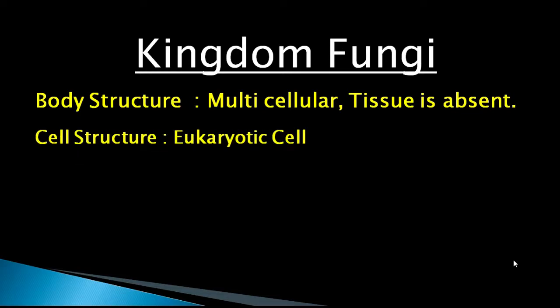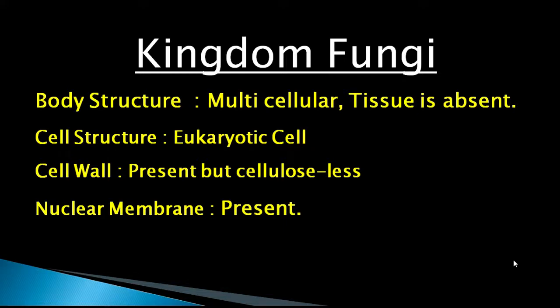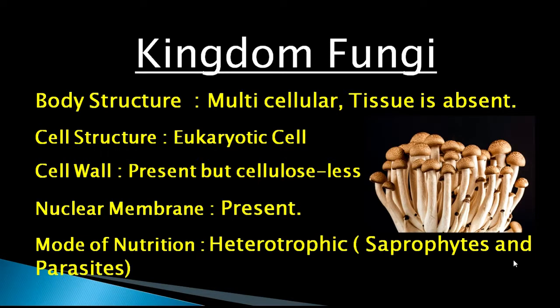Kingdom Fungi: body structure is multicellular but tissue is absent. Cell structure is eukaryotic. Cell wall is present but cellulose-less. Nuclear membrane is present. Mode of nutrition is heterotrophic — saprophytes and parasites. Examples include fungus, mushrooms, etc.